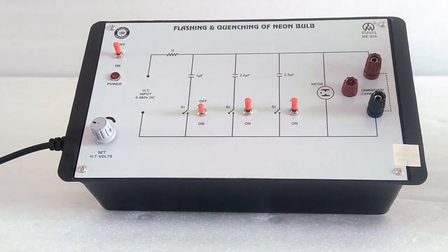Here is the flashing and quenching of neon bulb apparatus. To observe the flashing and quenching of neon bulb model number NB565, we can also find the unknown capacitance with the help of this apparatus.